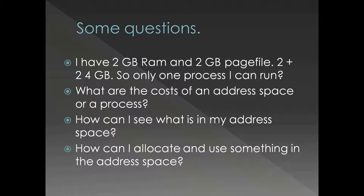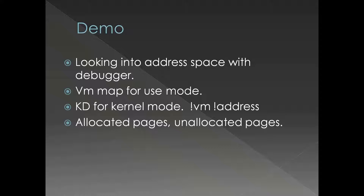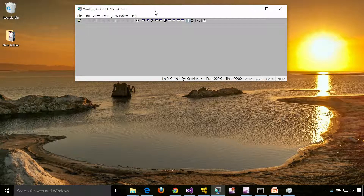The debugger gives you the closest possible look into an address space. Other tools like VM Map are also available, which we'll see shortly. We already answered how to allocate and use something in the address space: VirtualAlloc, HeapAlloc, MapViewOfFile — all those allocation functions. When you allocate something on the stack, that is also inside your address space. We have demos lined up: looking into the address space with a debugger, then VM Map from Sysinternals to peek into user-mode address space, and for the kernel's upper 2GB, KD is the best option.